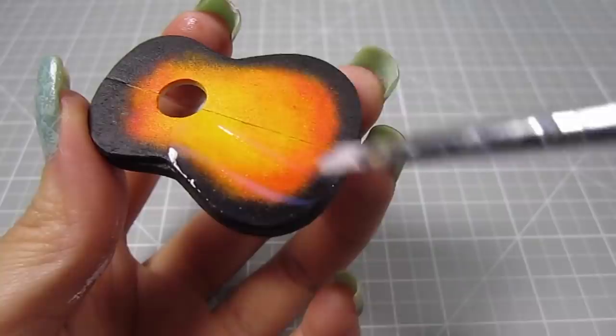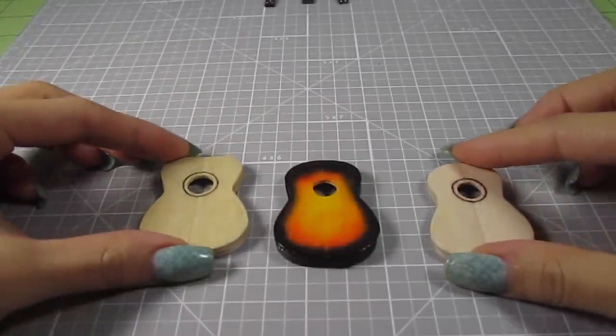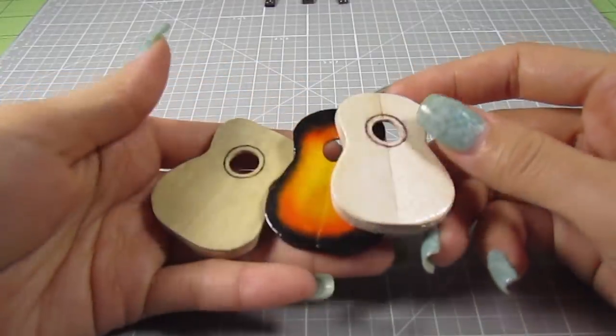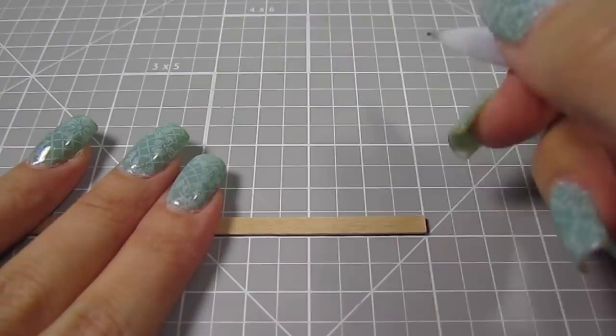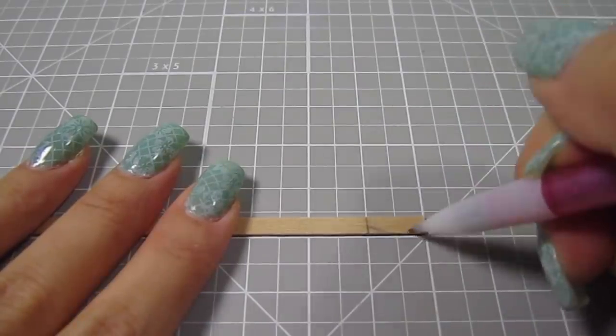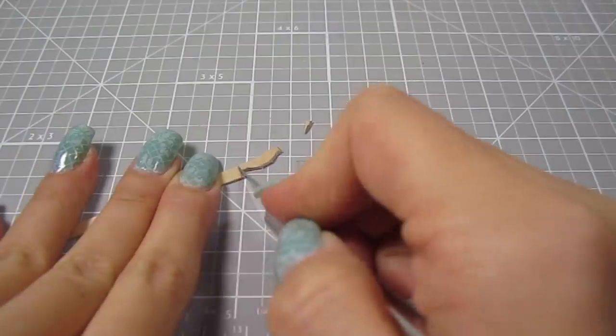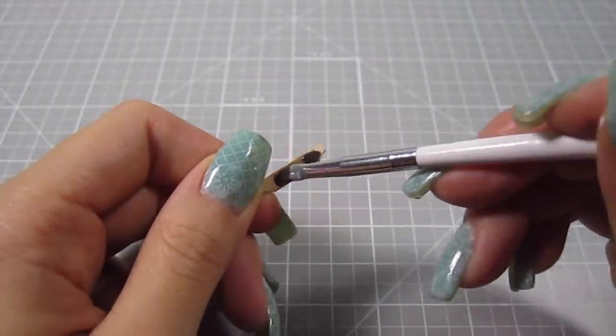Then sponge off some black around the perimeter and the sides. Add some varnish to seal in the color. I made the third guitar super simple again with just a circle around the sound hole.